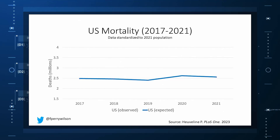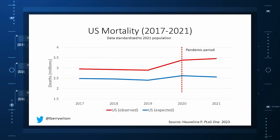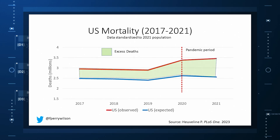Here is the expected number of deaths in the US over the past five years. Note that there's a small uptick in expected deaths in 2020 reflecting the pandemic, which returns to baseline levels by 2021 — because that's what happened in Europe. By 2021, excess mortality due to COVID-19 was quite low. Here are the actual deaths in the US during that time. Highlighted here in green is the excess mortality over time in the United States.